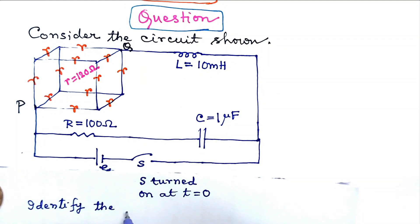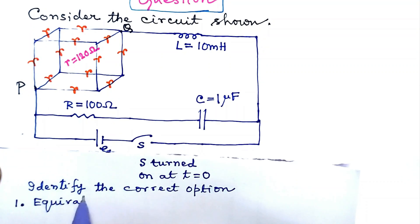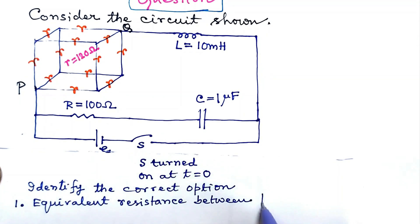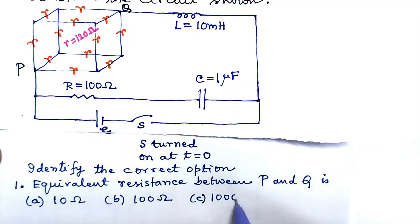Identify the correct option. Number one, equivalent resistance between p and q is, the options are a, b, c, d.